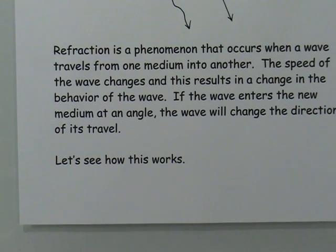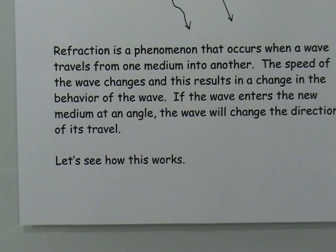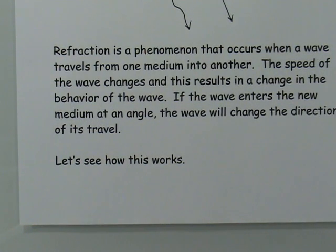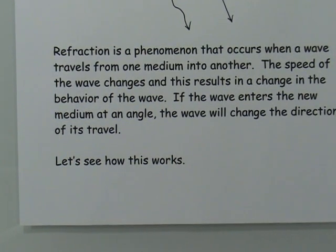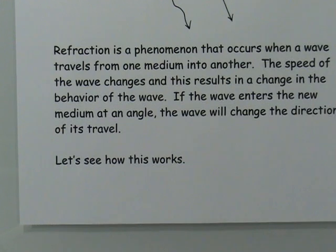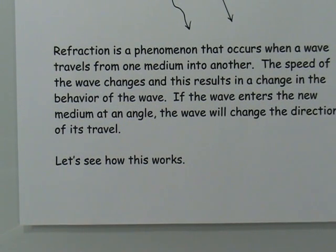Light and sound work in exact opposite ways. Light, when the medium it travels in has very low density — meaning very few atoms — travels very fast. As you go through media with more densely packed atoms, the light will travel more slowly. Sound does exactly the opposite: sound wants the atoms, as the atoms are what carries the sound waves. So as the medium becomes more dense, sound waves travel better, farther, and much faster. Sound and light are very much opposites of each other.